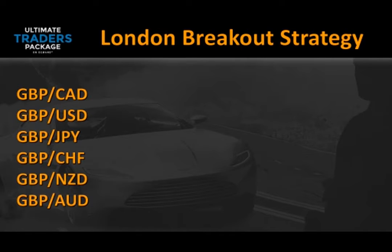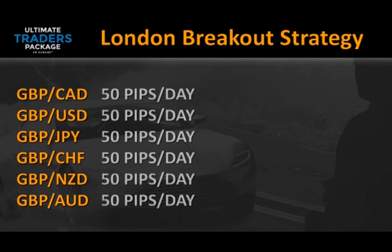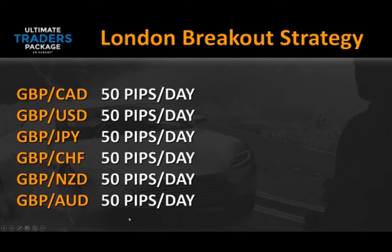Our goal with each one of these currency pairs is to go after 50 pips per day — that's first base. Josh was trading the GBP/AUD this morning and captured 91 pips. In the live trading sessions, Josh and Tyson will show you how to go after more pips on each trade.